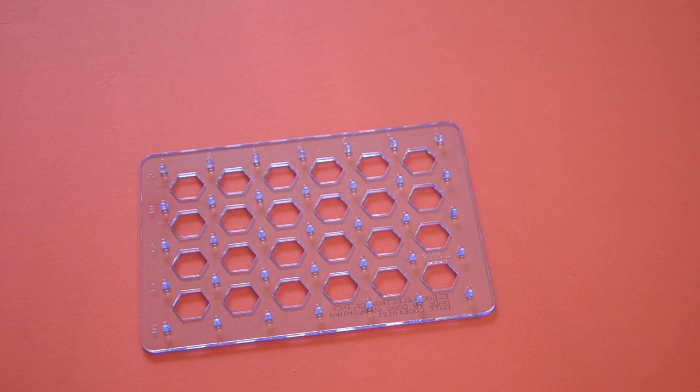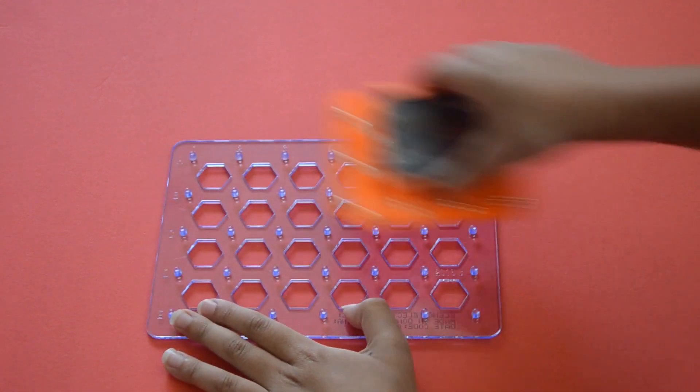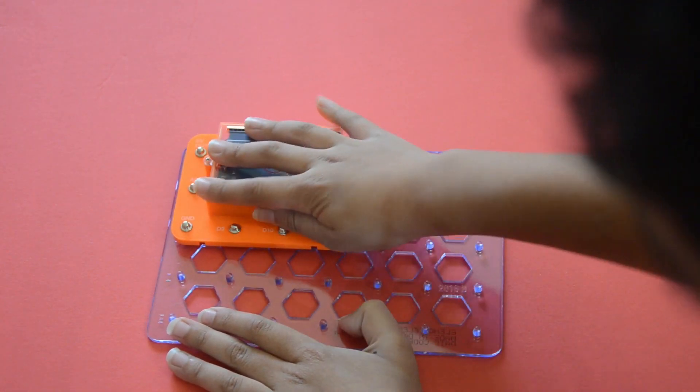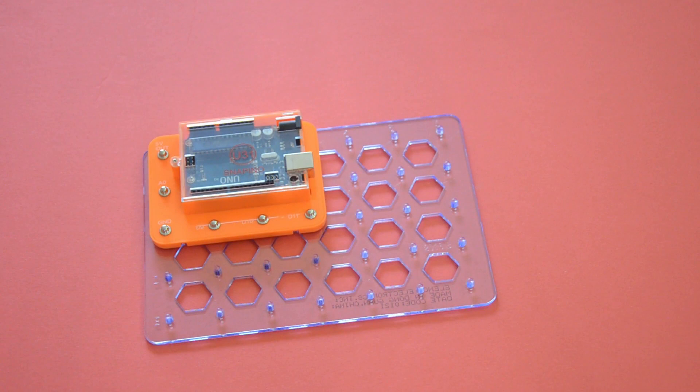Okay, so then you get the Arduino onto the layer. Make sure G and D is above the D part. So you can fix the Arduino.